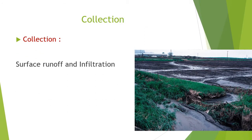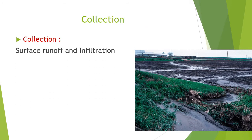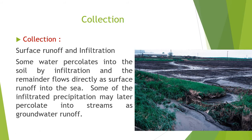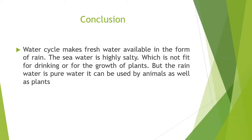Collection is done through surface runoff and infiltration. Some water percolates into the soil by infiltration, and the remainder flows directly as surface runoff into the sea. Some of the infiltrated precipitation may later percolate into streams as groundwater runoff.